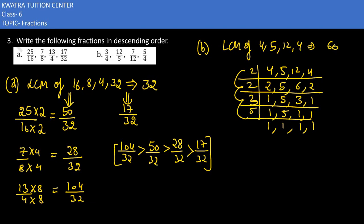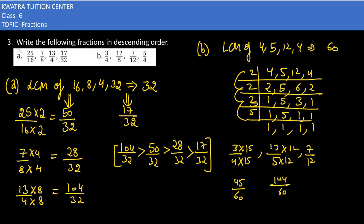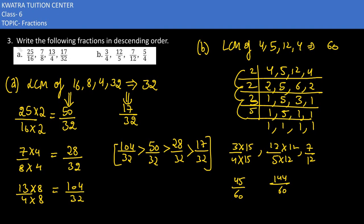Now we have to change all numbers accordingly. I have 3 by 4. 4 will make 60, so it must be multiplied with 15. So this is 45 by 60. Then second number is 12 by 5. 5 will make 60, so this would become 144 by 60. Third number is 7 by 12. 12 will make 60, so I need to multiply it with 5. So this is 35 by 60.